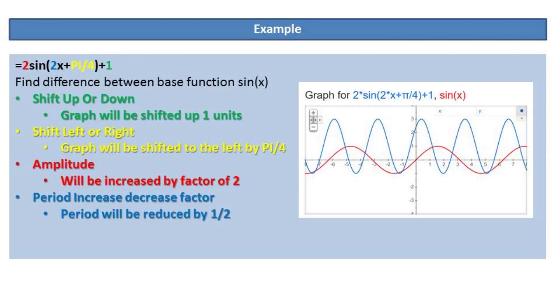The green +1 will shift the whole graph up one unit. The +π/4 will shift the whole graph over to the left by π/4. The red 2, or the amplitude, will increase all values along the sine wave by a factor of 2. And finally, the blue 2 next to the x will reduce the period by 1/2. I hope this video helped, and thanks for watching.